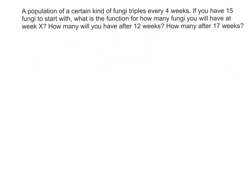So here's the next slide that puts a little wrinkle into things. A population of a certain kind of fungi triples every four weeks. So if you have 15 fungi to start with, so there's our initial amount. So f(x) is going to be 15 times. Now it's going to triple every four weeks. So what we're going to say is that it's going to be 3 to the x, except what we really want to account for is if we want to count x's by ones, then it's going to take four countings before we get to tripling.